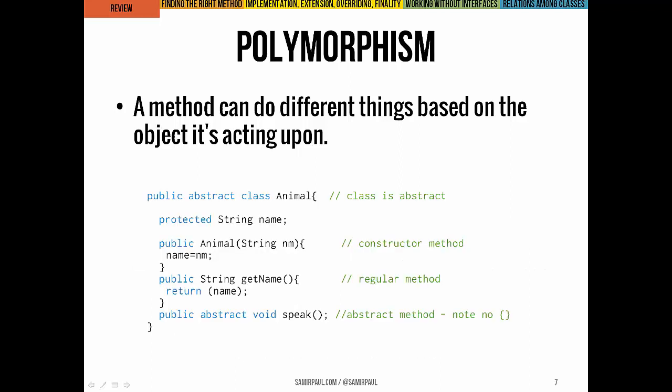Let's look at an example of polymorphism in action. Here we have an abstract class Animal. Animal has one instance variable — name — a constructor, a getName method, and a method called speak. That method is abstract, so in this abstract class Animal, speak is not implemented. Speak is an abstract method, but in subclasses that are not abstract, it will have to be implemented.